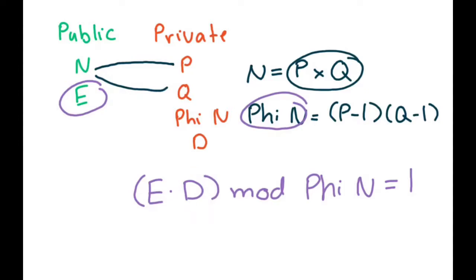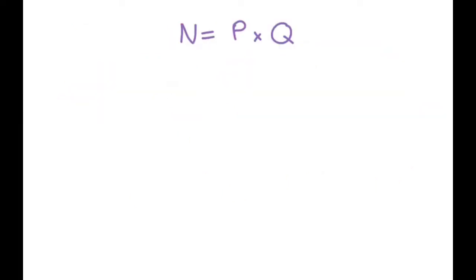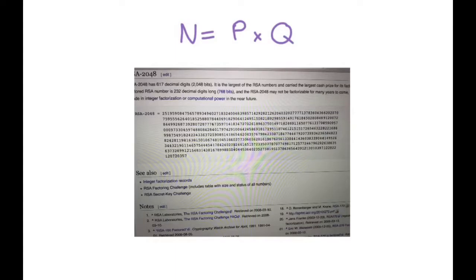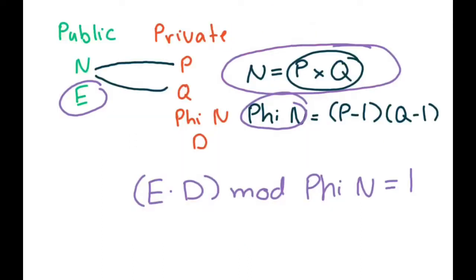This all sounds pretty great for the message interceptor — he seems to have calculated d pretty easily, but there is a catch. It happens when the message interceptor is trying to factor the public key value of n into its constituent factors p and q. The problem is that n is typically a really, really huge number. This is the kind of length I'm talking about for a semi-prime number n. Because of the difficulty of factoring n, it's going to take a long time to get p and q, and thus a long time to get phi(n), and thus a long time to gain access to the value of d.